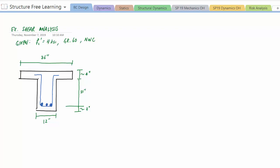All right, what's up everyone, welcome back to Structure Free Learning. In this video we're going to do a quick shear analysis example problem from reinforced concrete, as simple as it possibly gets. I am given 4 ksi concrete, grade 60 steel, normal weight concrete, and I have shear stirrups here with a number three bar at a 10-inch spacing.